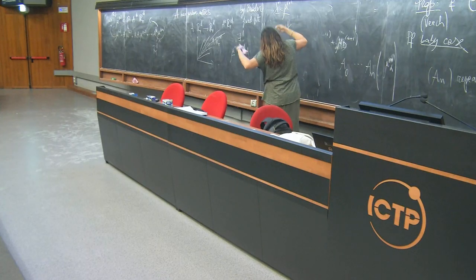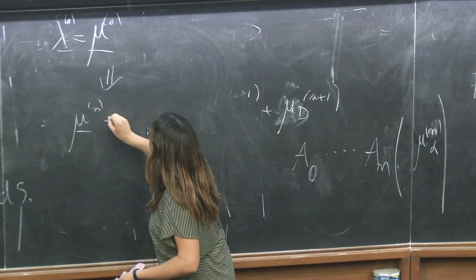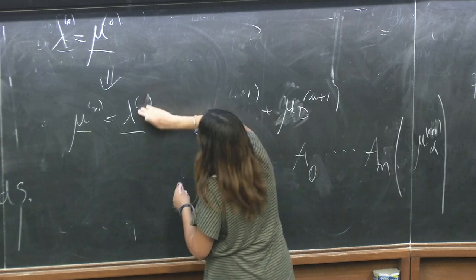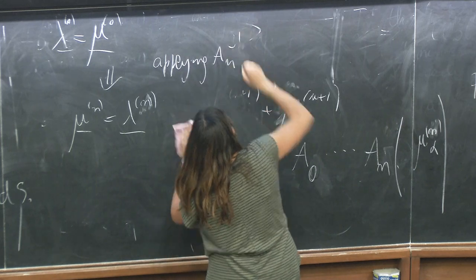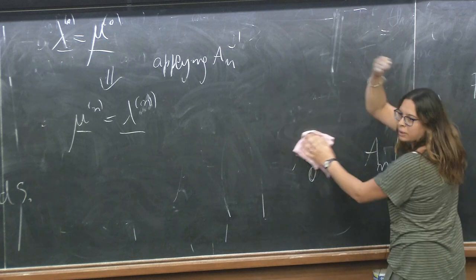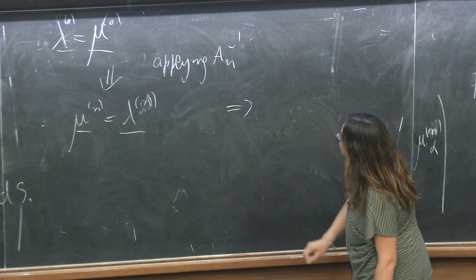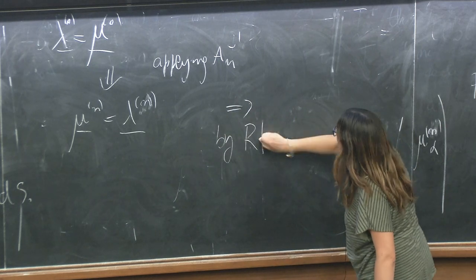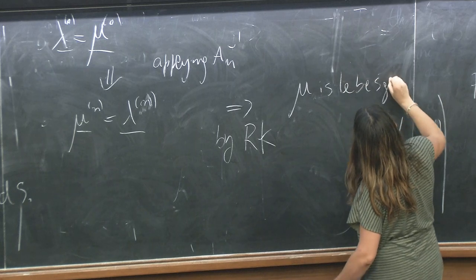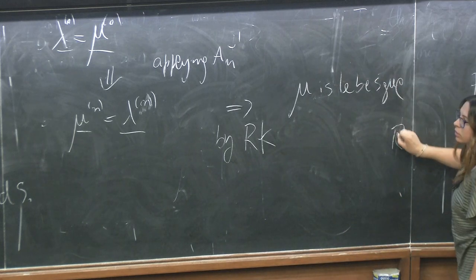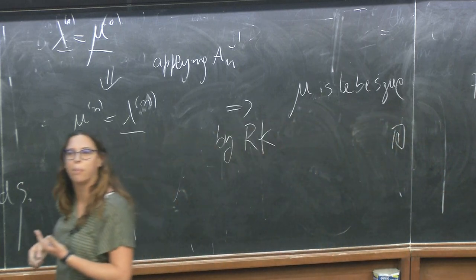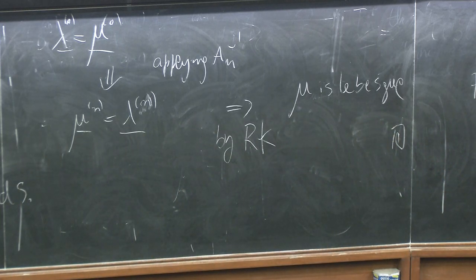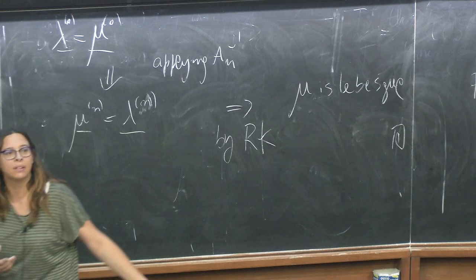Once the initial vector μ_0 is determined — and it coincides with the Lebesgue lengths — everything is determined at every stage by applying the matrices. By the initial remark, since μ and Lebesgue coincide on all tower floors and the floors generate the σ-algebra, the measures coincide. So the towers are helpful to prove non-mixing, and renormalization is helpful to study unique ergodicity.